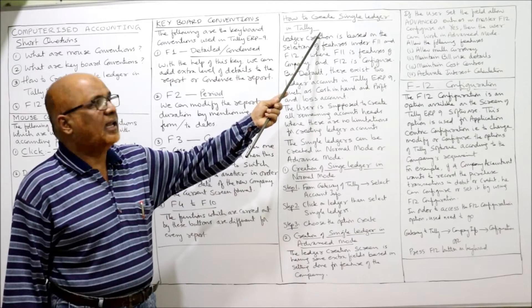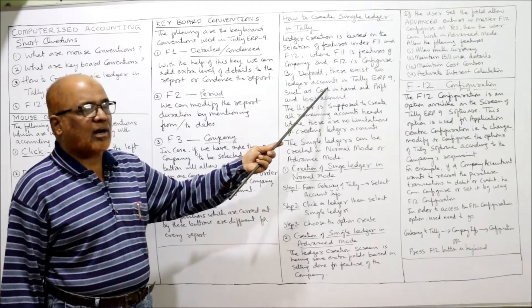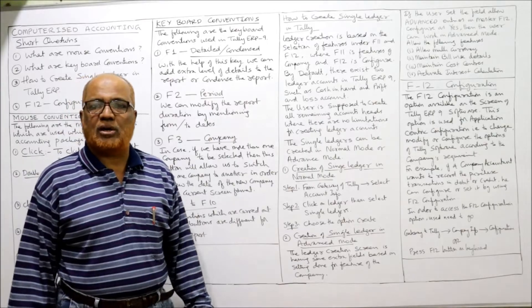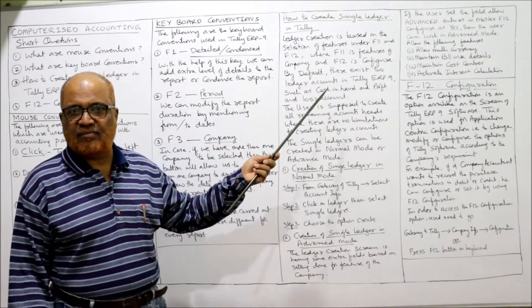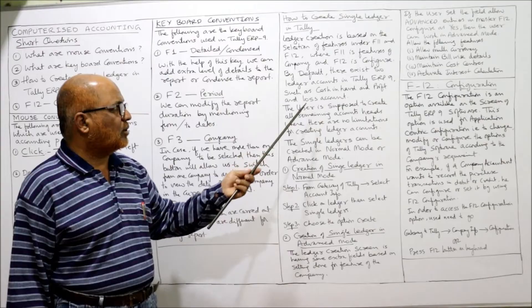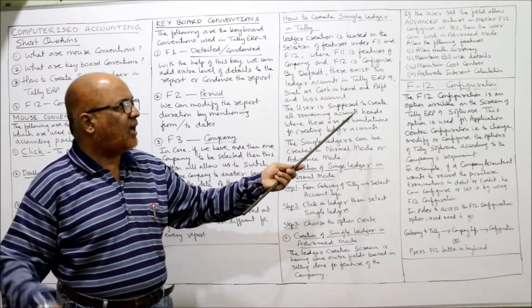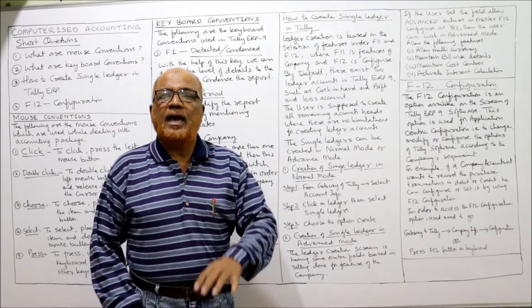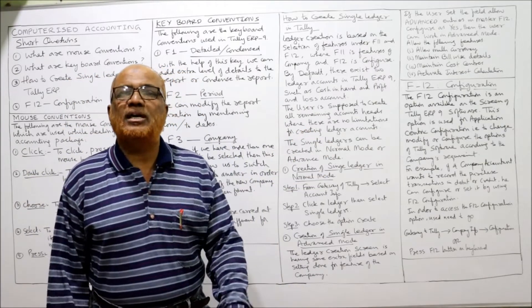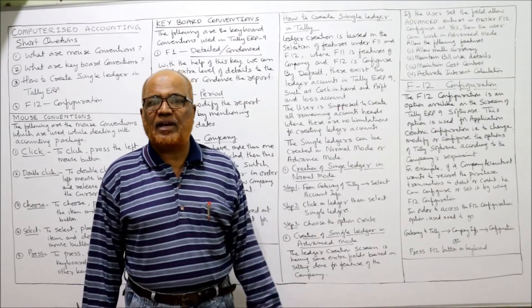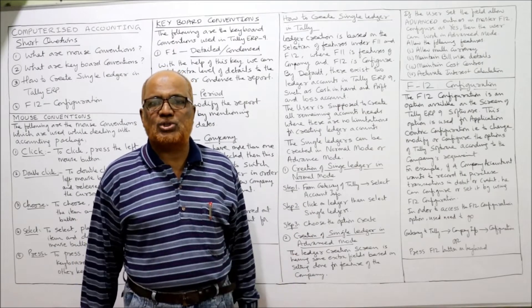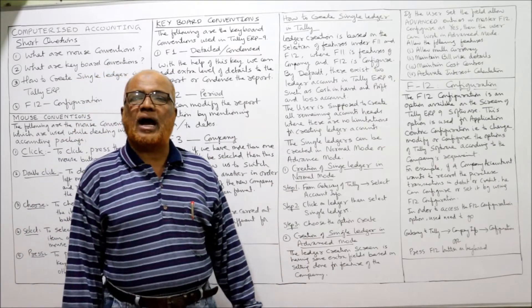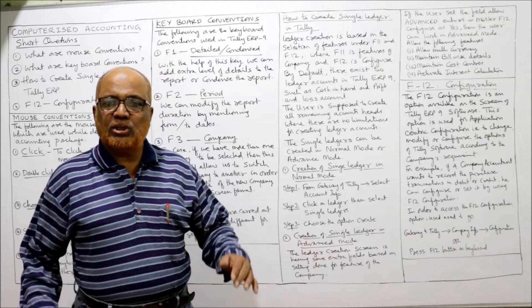By default, there exist two ledger accounts in Tally ERP 9: cash in hand and profit and loss account. The user is supposed to create all remaining accounts under the appropriate heads. There is no limitation on the number of ledger accounts — the user can create any number of accounts under a specific head. A single ledger can be created in normal mode or advanced mode.